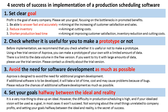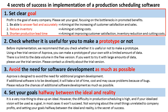Let me introduce 4 secrets of success in implementation of production scheduling software. Secret 1: Set clear goals. Profit is the goal of every company. Please set your goal focusing on the bottlenecks in promoted benefits.